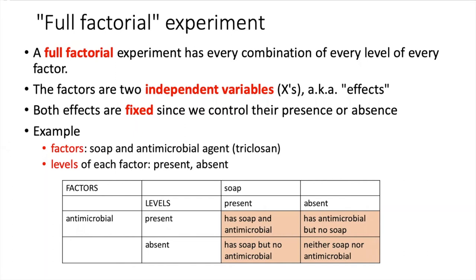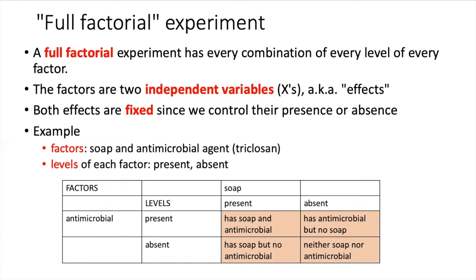The experiment involves testing the effect of soap on bacteria on people's hands, and also testing the effect of triclosan, which is an antimicrobial agent. For both of these factors, we can have it present or absent. The combinations are: soap and antimicrobial agent, antimicrobial agent without soap, soap without antimicrobial agent, or neither one.